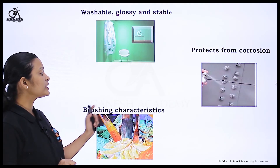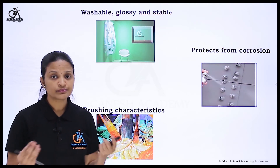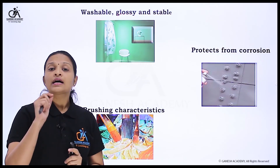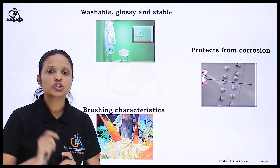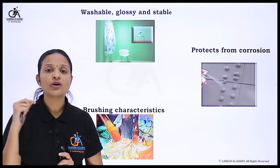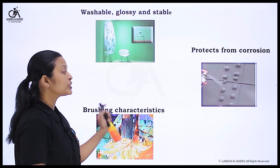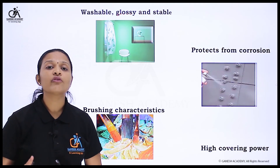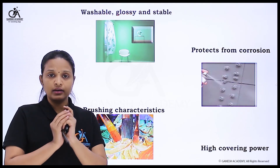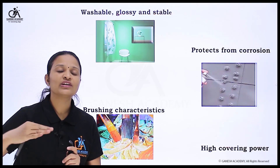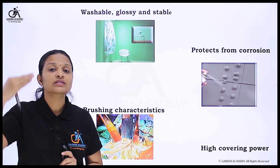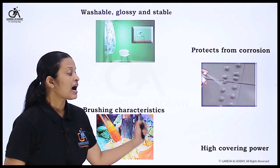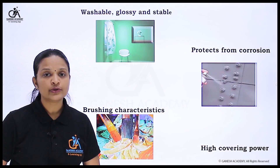The next property is brushing characteristics. Different types of brushes are available with differences in size and structure. Brushing characteristic means that paint can be easily applied using any type of brush on a particular surface or article. The next characteristic of good paint is high covering power — it should have high covering power, meaning that with a small amount of paint it covers a comparatively larger area or surface.